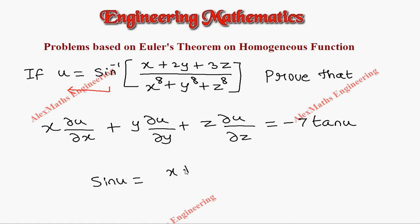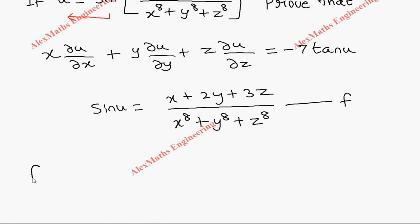Let's take this as function f, and f is in terms of x, y, and z. So let's write f of x comma y comma z is the whole function: x plus 2y plus 3z whole divided by x power 8 plus y power 8 plus z power 8. Now to check if it is homogeneous or not, we have to place x as tx, y as ty, z as tz.